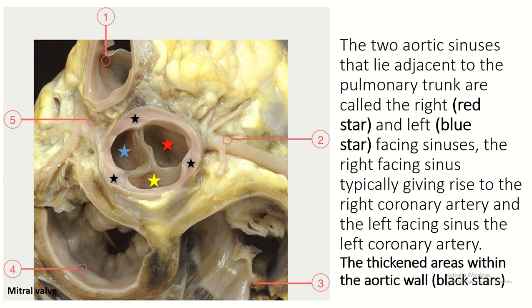This is the cross-section of the left atrium and you can see the mitral valve. This is the cross-section of the right atrium showing the tricuspid valve, and this is the pulmonary trunk.